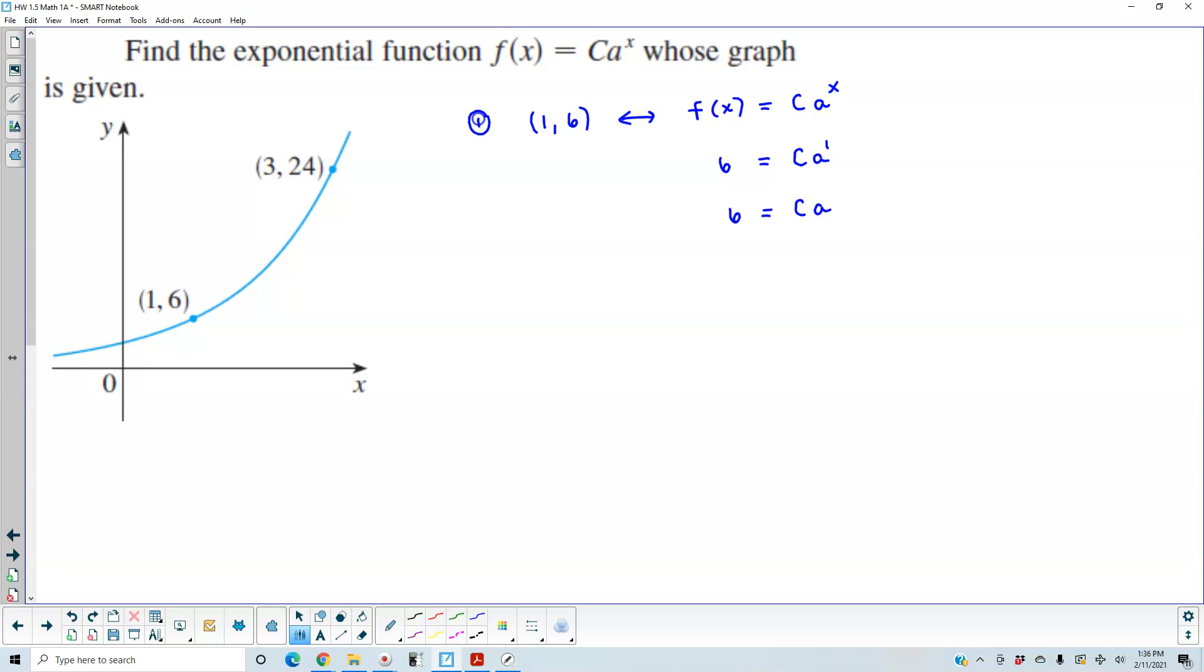So now this becomes 6, which is equal to c a. And now we're going to solve for c. So if we divide both sides by a, then we know that c is equal to 6 over a.